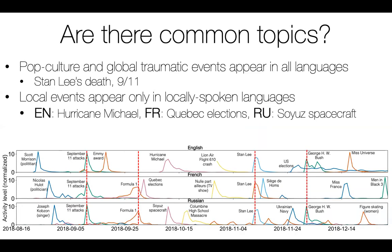Looking at what topics are common versus different across the three languages, interest in global pop culture and dramatic events like 9/11 and Stan Lee's death are common across all language editions. However, many events appear only in one language — for example, local natural disasters or local politics appear only in locally spoken languages. Hurricane Michael appeared only in English, Quebec elections only in French, and Soyuz spacecraft-related aerospace events appeared only in Russian.